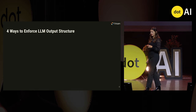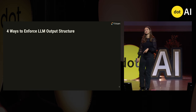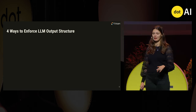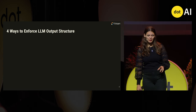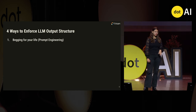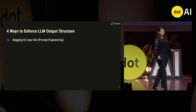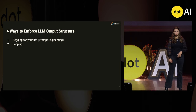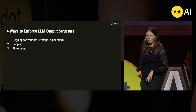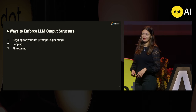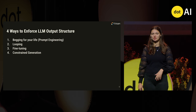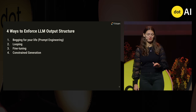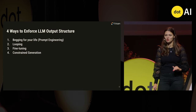I'm also going to talk about what this tells us about the increasing importance of inference time for LLMs. The four ways are: begging for your life — or prompt engineering, the technical term — looping, which is when you get to do it over and over again, fine tuning, and finally constrained generation. You can probably tell by the one that's last that it's going to be my favorite.